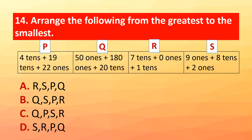Question 14: Arrange the following from greatest to smallest — P: 4 tens + 19 ones, Q: 50 ones + 180 ones + 20 tens, R: 7 tens + 0 ones + 1 ten, S: 9 ones + 8 tens + 2 ones. The correct answer is option C: Q, P, S, R.